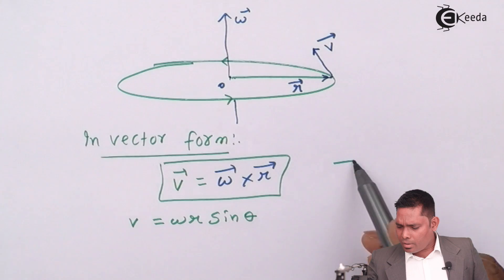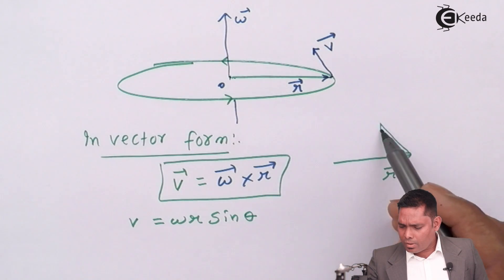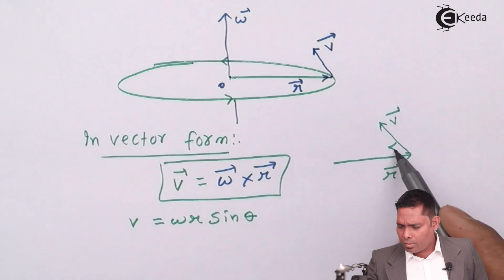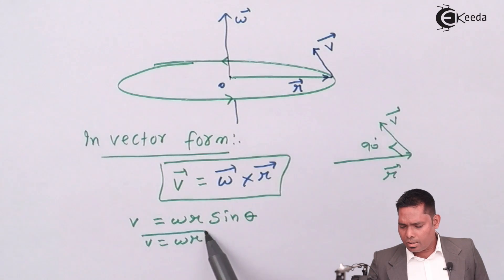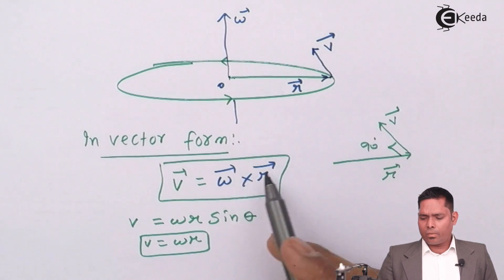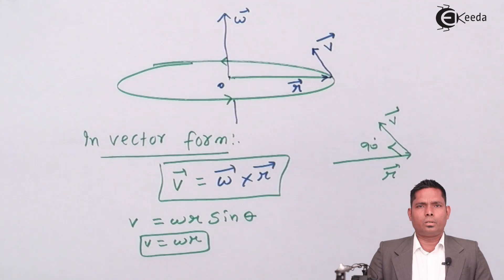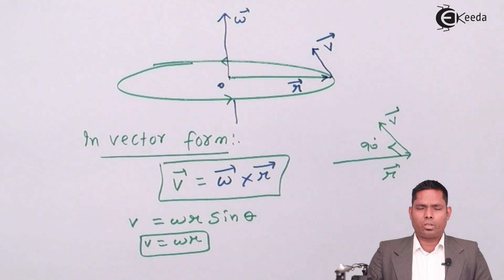The R vector and the V vector make an angle of 90 degrees. Therefore, the linear relationship is V equals omega R, and in vector form, V equals omega cross R. That is all about the relation between V and omega. Thank you.